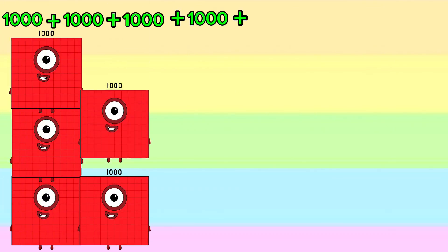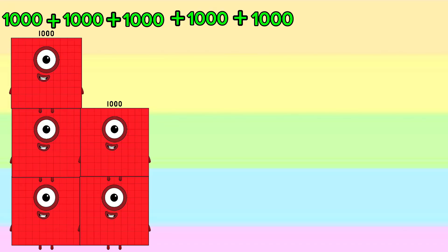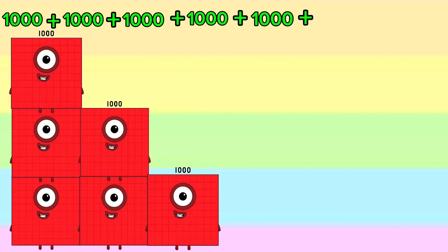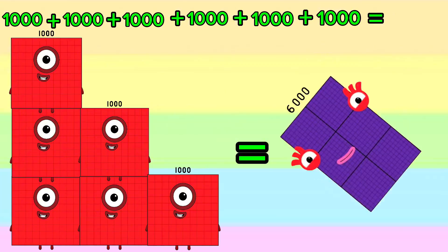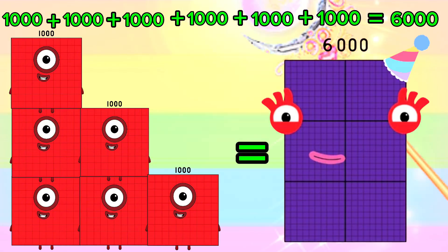1,000 plus 1,000 plus 1,000 plus 1,000 plus 1,000 plus 1,000 is equals to 6,000. Join me and let's count one more time!